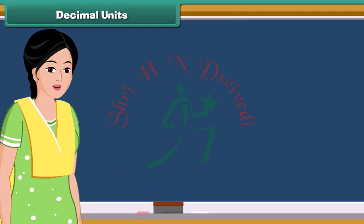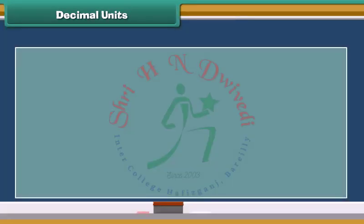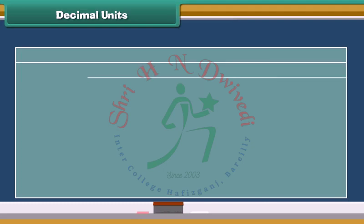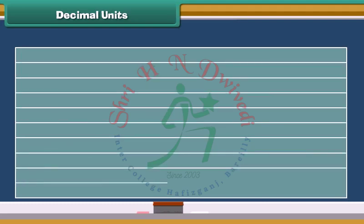To understand decimals, we need to learn about place value first. Imagine we have a rectangle that represents one whole object. If we divide it into 10 equal size rectangles, we will have 10 parts of 1, or we can say tenths.